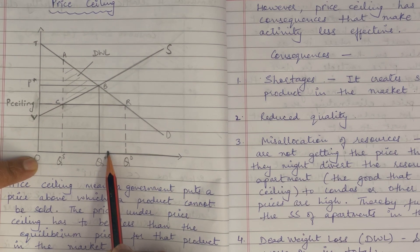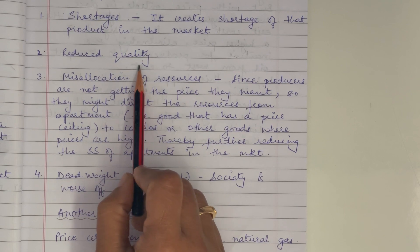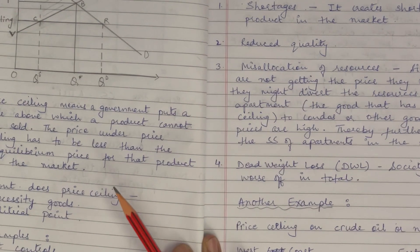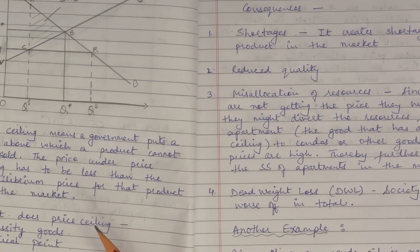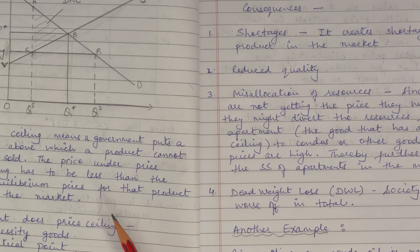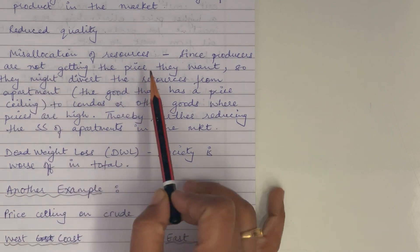The second consequence is that it reduces the quality of the product. In the case of rent control, landlords know they cannot charge a higher price, so they will be least bothered to renovate or refurbish their apartments. They would provide low-quality apartments to tenants.